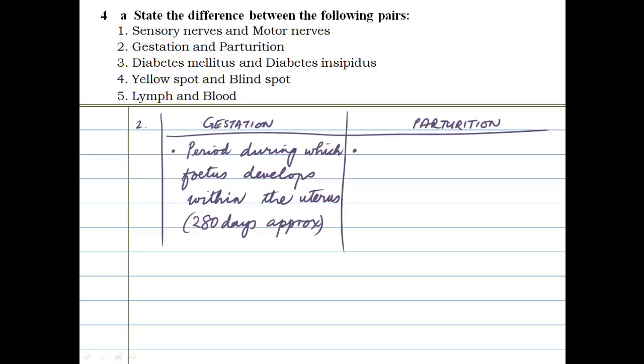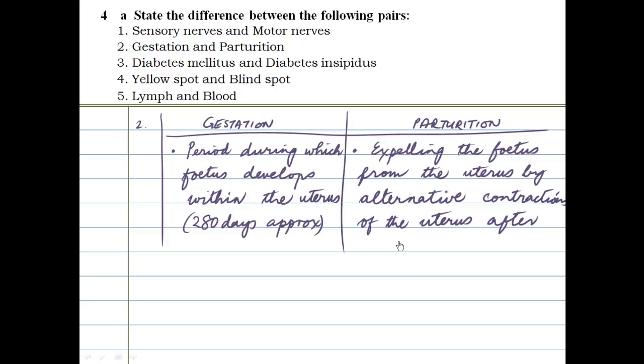Parturition is what delivery is about. It is the expelling of the fetus from the uterus by alternative contractions of the uterus after gestation is complete. That is after the baby has developed. That's what parturition is. That's perfect. Let's move on to the next one.